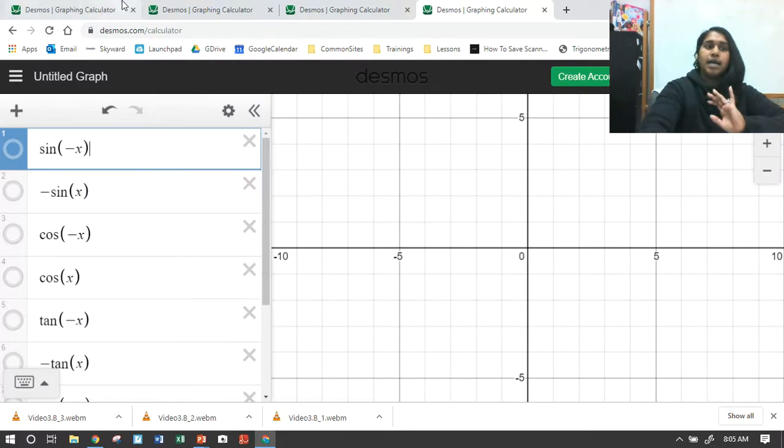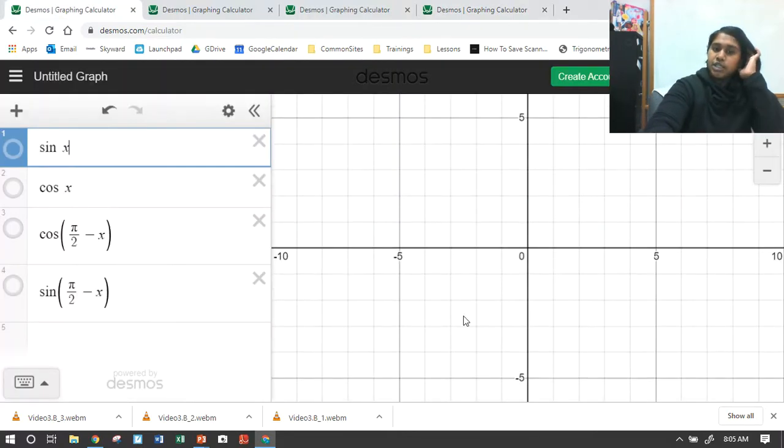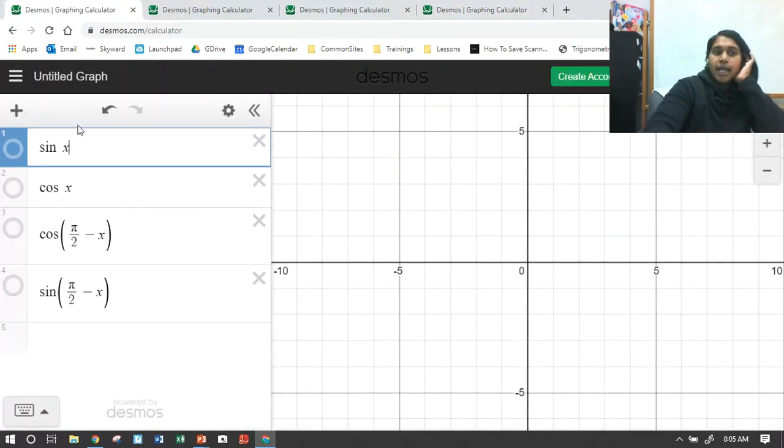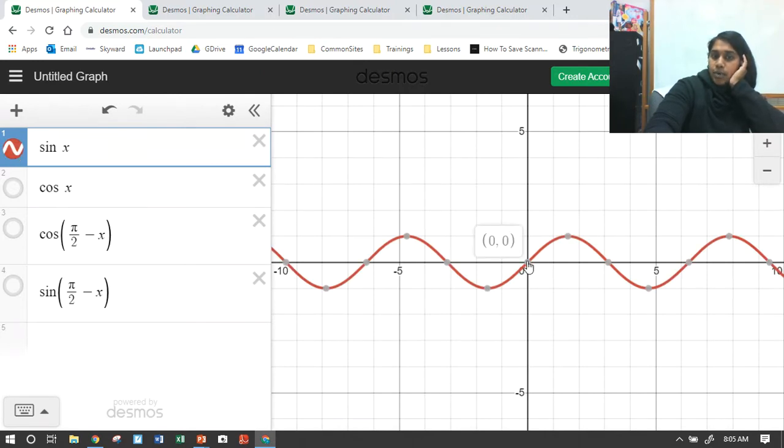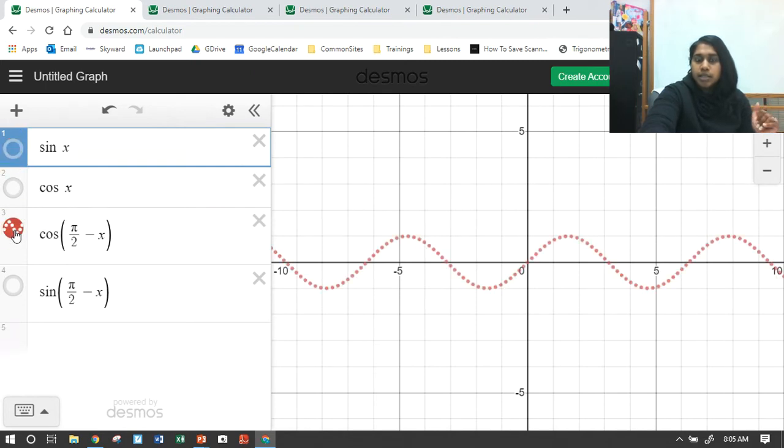But to give you a better idea, I've got a Desmos visual representation. So here I have sine of x. And if I literally take this point and move it to the left by a pi over 2, basically, I end up with this one right here.